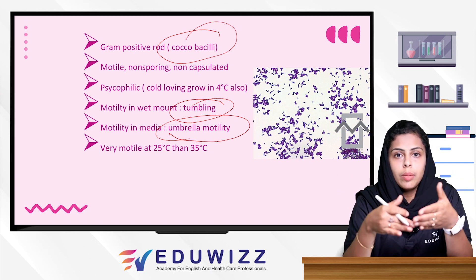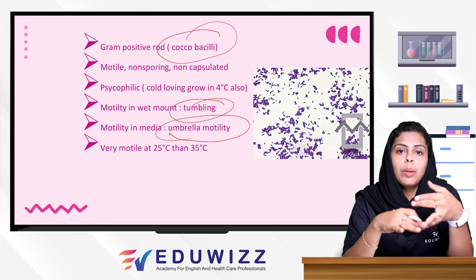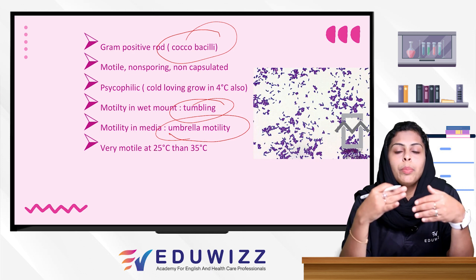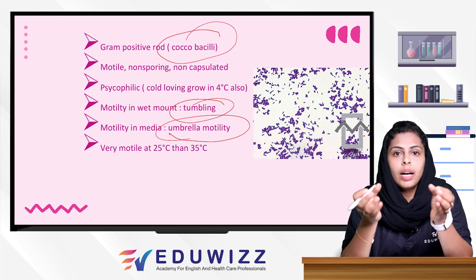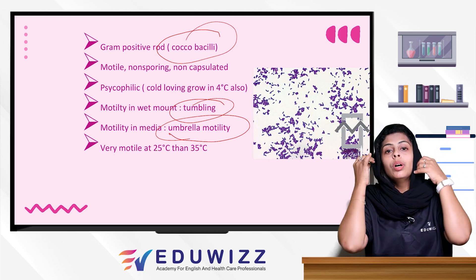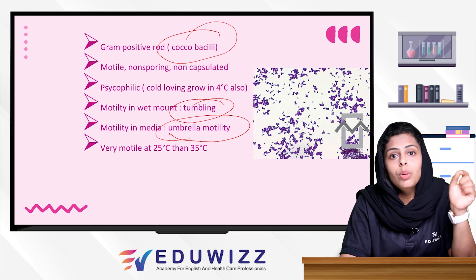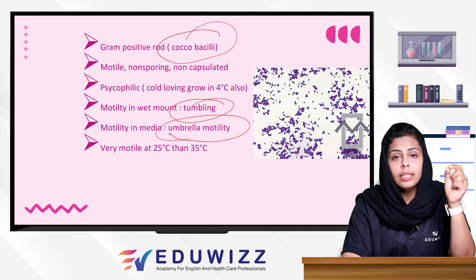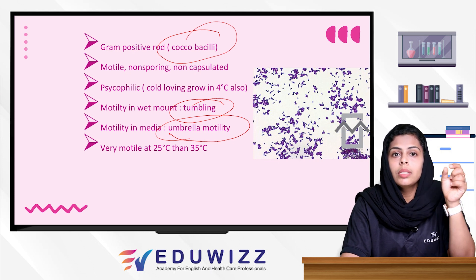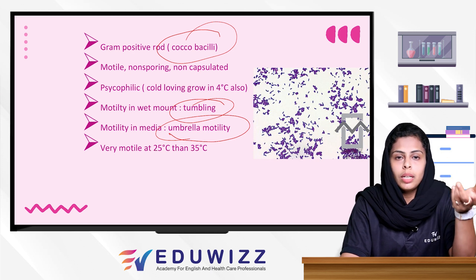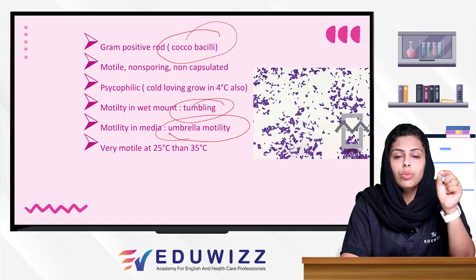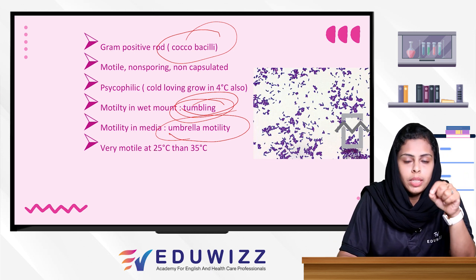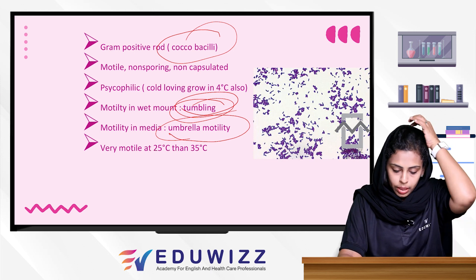Listeria Monocytogenes is commonly tested in microbiology and lab technology student exams. To review the key characters: it is a gram-positive coccobacilli, non-sporing, and motile. Motility is of great importance — in a wet mount it shows tumbling motility, and in semi-solid media it gives umbrella motility. These are the peculiar features of Listeria.